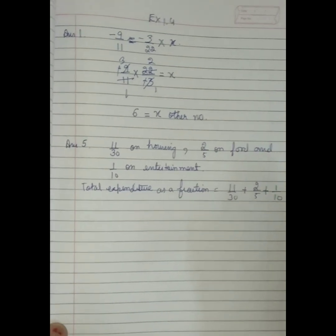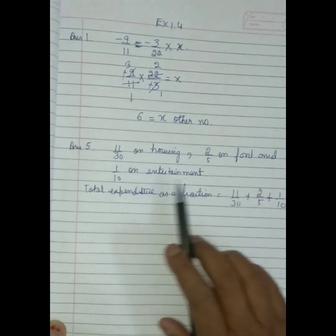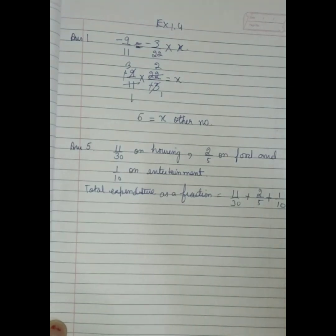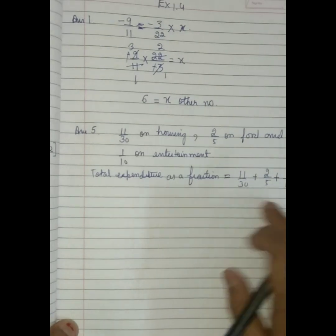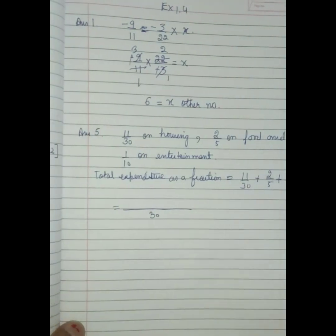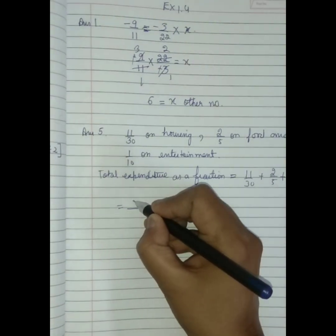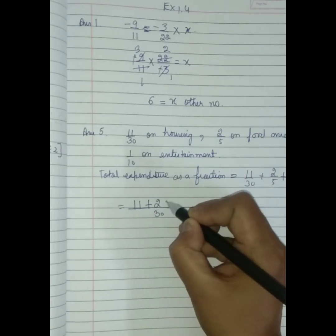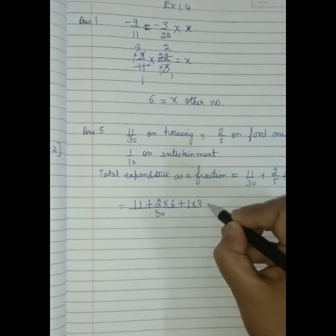Now let's do it practically. Let's see students. This much on housing, this much on food, and this much on entertainment. So total expenditure as a fraction is this. What we will do? We will add them. We will take the LCM. Then 30. If we add LCM, then what we will do? 11, it comes 11, plus 2 into 6, plus 1 into 3.